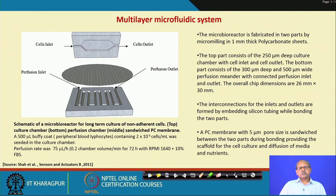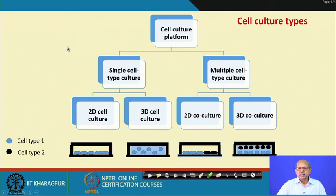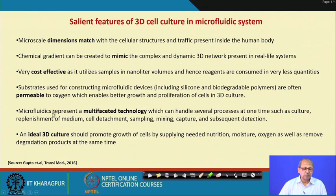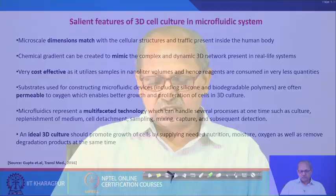Cell culture systems in microfluidics include single cell type and multiple cell type formats, 2D and 3D cell culture, and 2D and 3D co-culture. For 3D cell culture in microfluidic systems, chemical gradients can be created to mimic complex and dynamic 3D networks. The approach is cost-effective, and substrate materials including silicon and biodegradable polymers are often permeable to oxygen. Ideal 3D cell culture should promote cell growth by supplying needed nutrition.